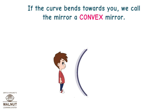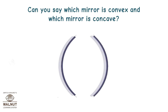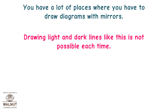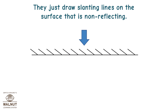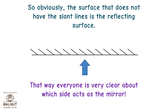If the curve bends towards you, we call the mirror a convex mirror. If the curve bends away from you, we call the mirror a concave mirror. You have a lot of places where you have to draw diagrams with mirrors, and drawing light and dark lines each time is not practical. So scientists have come up with a quick way — they just draw slanting lines on the surface that is not reflecting. The surface without slant lines is the reflecting surface. That way, everyone is clear about which side acts as the mirror.